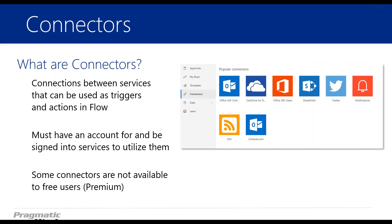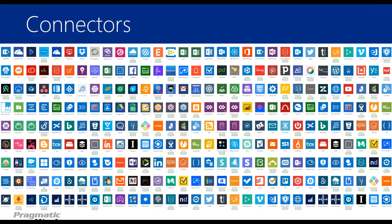It's really only specific connections you can't use if they are premium, and most of the time it's not going to be an issue. This is just a visual to show you there are a lot of connectors — this is a handful of them, constantly growing, 200-plus. It's kind of supposed to be a little overwhelming — there are tons of potential connectors we could use in Flow.